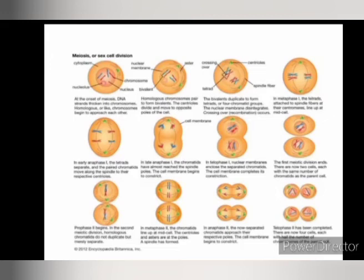In early anaphase one, the tetrads separate and the paired chromatids move along the spindle to their respective centrioles. In late anaphase one, the chromatids have almost reached the spindle poles and the cell membrane begins to constrict. In telophase one, nuclear membranes enclose the separated chromatids, the cell membrane completes constriction, and the first meiotic division ends — there are now two cells with the same number of chromatids as the parent cell. In prophase two, homologous chromatids do not duplicate but merely separate. In metaphase two, chromatids line up at mid-cell. In anaphase two, the now-separated chromatids approach their respective poles, and the cell membrane begins to constrict. In telophase two, there are now four cells, each with half the number of chromosomes of the parent cell.